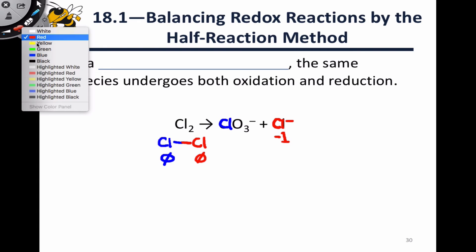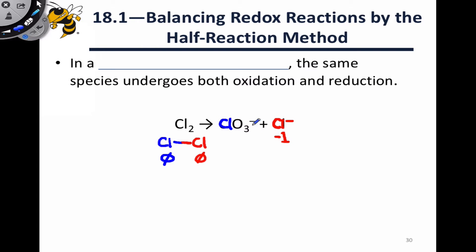And in ClO3-, we have three oxygens for a total of negative six. The charge on the ion is negative one.